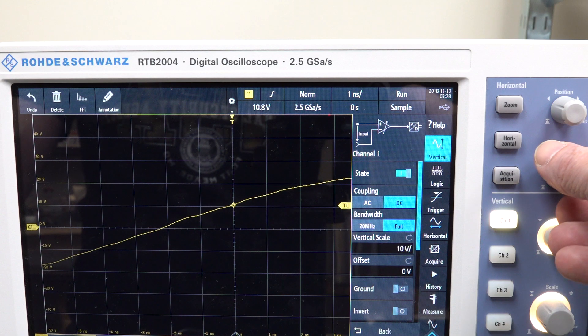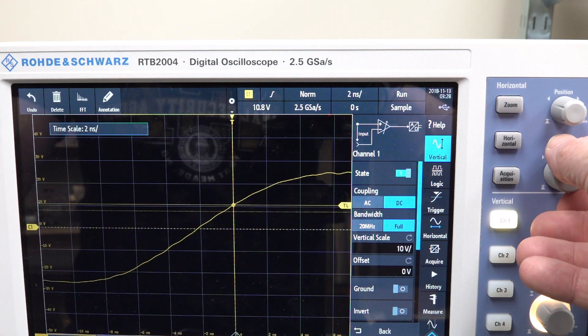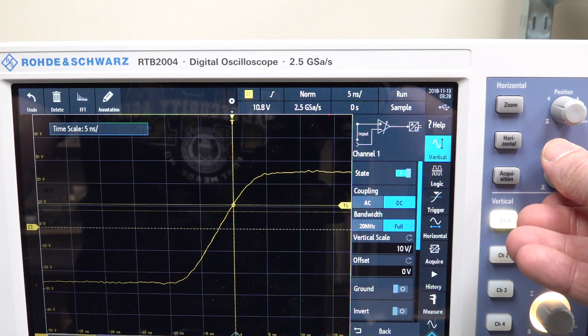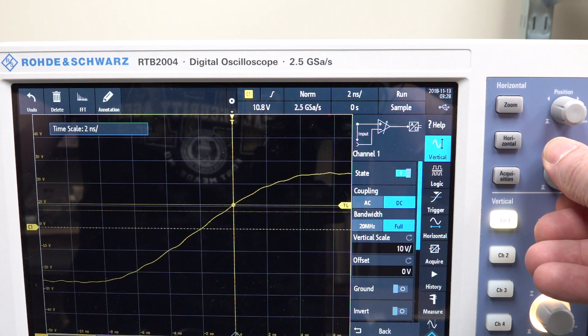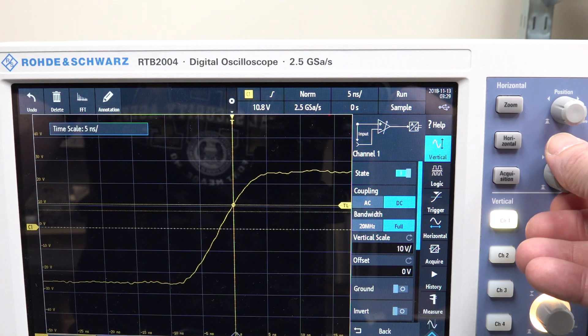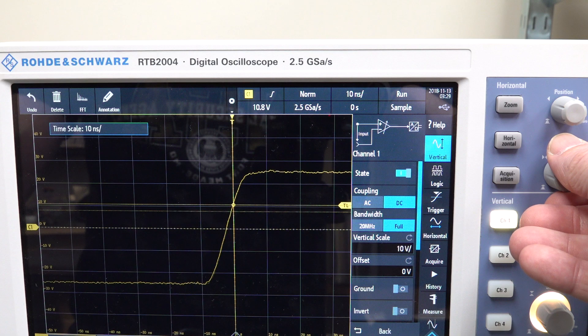I'm at one nanosecond per division here, okay? And everything's 1, 2, 5, 10. So we've got our traditional 1, 2, 5, 10 sequence, right? Let's see what happens when we go up.